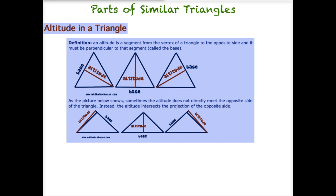Let's first explore altitudes. What is an altitude? An altitude is a segment that comes from the vertex of a triangle to the opposite side, and it must be perpendicular to that segment, and that segment is called the base. You can see six different examples here of altitudes, and notice that in each case it forms a 90 degree angle with its base.